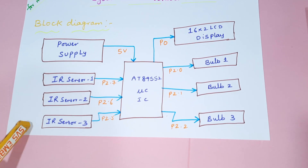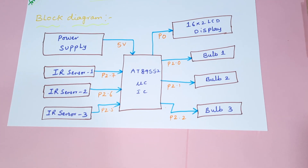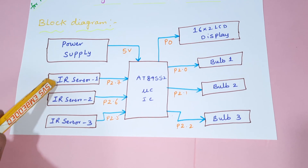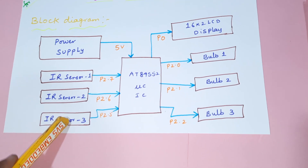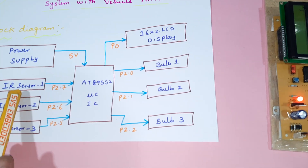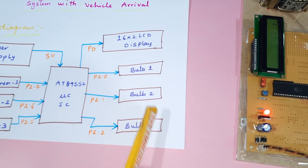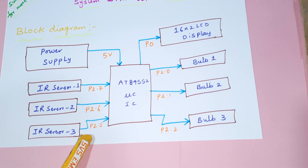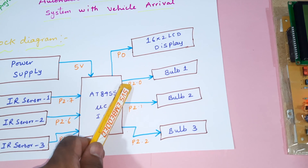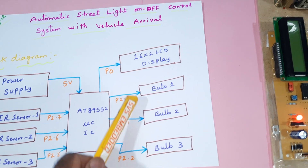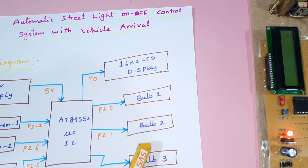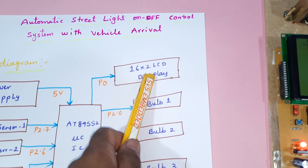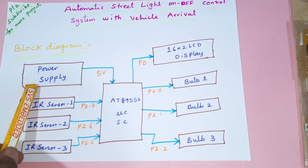We are using three IR sensors — we can extend the IR sensors as needed, but here we are using three: IR sensor one, IR sensor two, IR sensor three. According to those, bulb one, bulb two, and bulb three are connected via ports P2.7, P2.6, P2.5, P2.0, P2.1, P2.2. There is also an LCD display to show whether a vehicle is arriving or not.